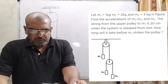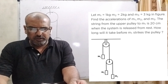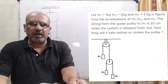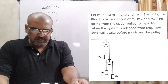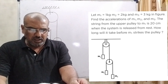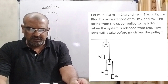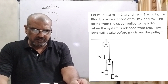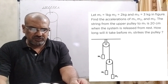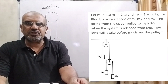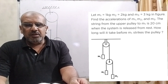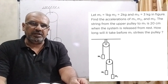Thank you. Now here is the question. Let M1 = 1 kg, M2 = 2 kg and M3 = 3 kg according to the figure. Find the acceleration of M1, M2 and M3. The string from the upper pulley to M1 is 20 cm. When the system is released from rest, how long will it take before M1 strikes the pulley? This question is taken from H.C. Verma, Newton's Law of Motion, question number 28.